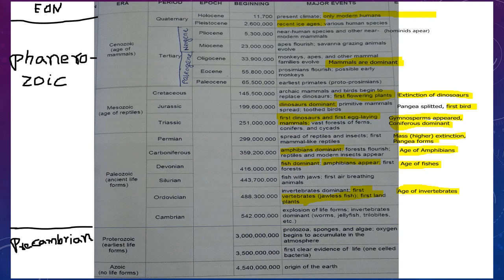Pre-Cambrian is not that much important — mostly questions are asked from Phanerozoic Eon. In Phanerozoic Eon there are three eras: Paleozoic, Mesozoic, and Cenozoic. The most recent is Cenozoic and the oldest is Paleozoic. In Paleozoic Era, six periods are there: Cambrian, Ordovician, Silurian, Devonian, Carboniferous, and Permian.